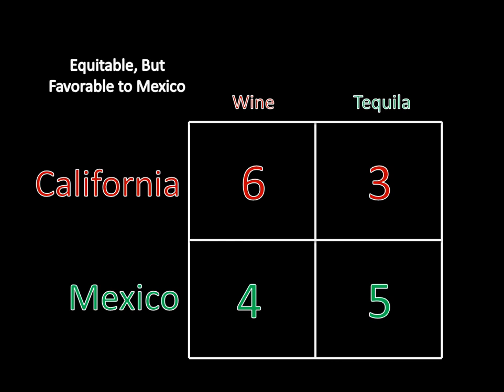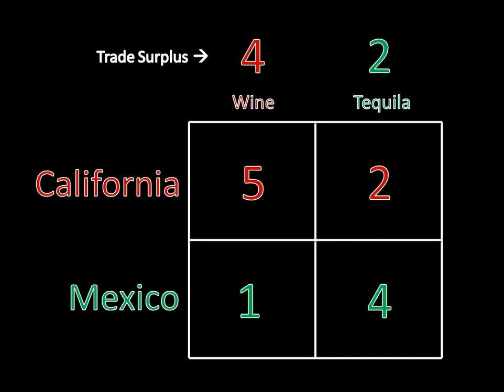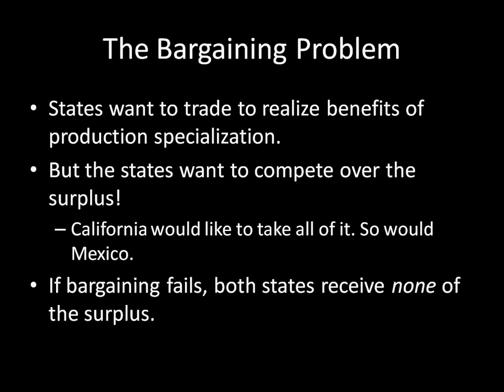So we call these extra bottles of wine and tequila the surplus created from trade. This surplus is something that can be bargained over, and we're not exactly sure how it's going to be resolved — we call this a bargaining problem. States want to trade to realize the benefits of specialization, with California producing wine and Mexico producing tequila. But states also want to compete over that surplus — the four extra bottles of wine and the two extra bottles of tequila. California wants to take all of that surplus, and Mexico wants to take all of that surplus.